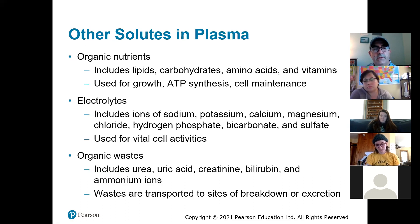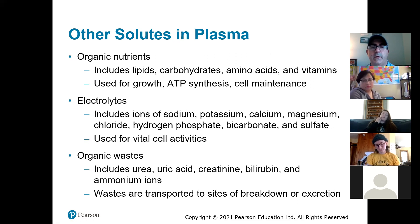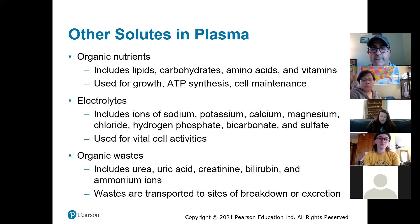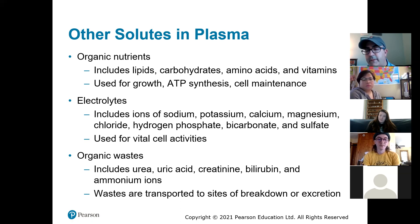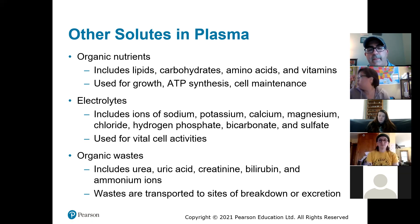Other things in the plasma: organic nutrients — lipids, carbs, amino acids, vitamins — used for growth, making energy, and so on. Electrolytes are just ions: sodium, potassium, calcium, magnesium, chloride, bicarbonate, sulfate. A lot of those are signaling molecules having to do with things getting in and out of the cell. Calcium, potassium, and sodium are essential for cells to function normally — for neurons and muscles to function.